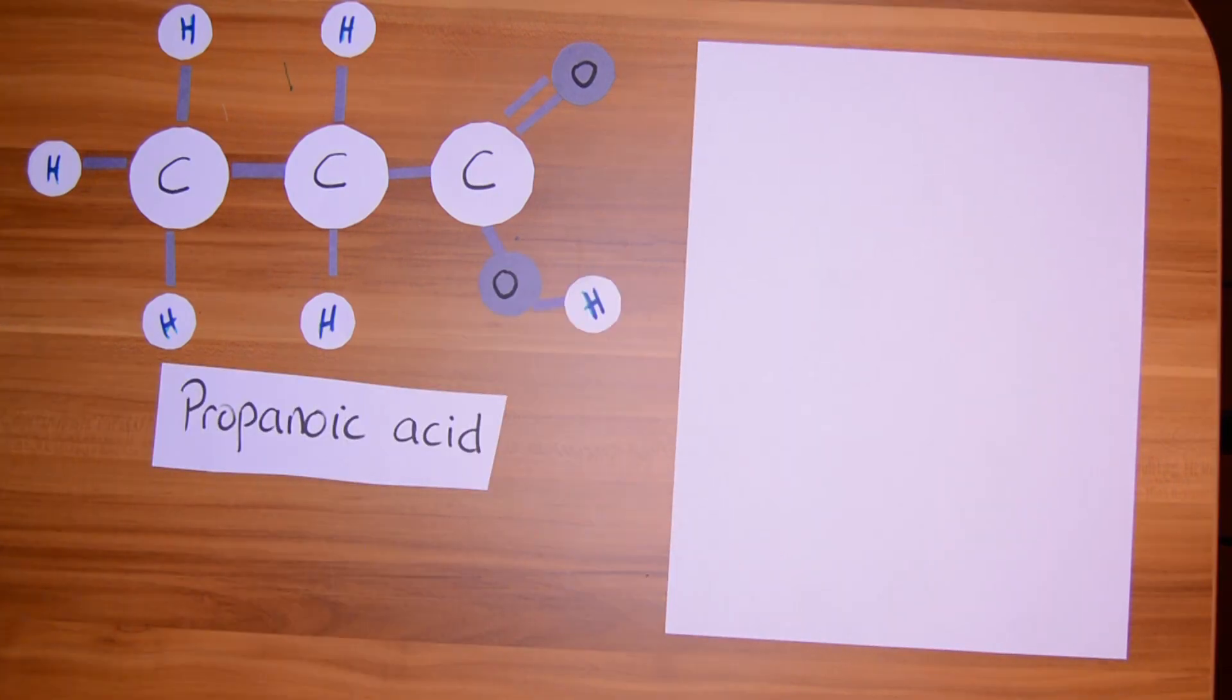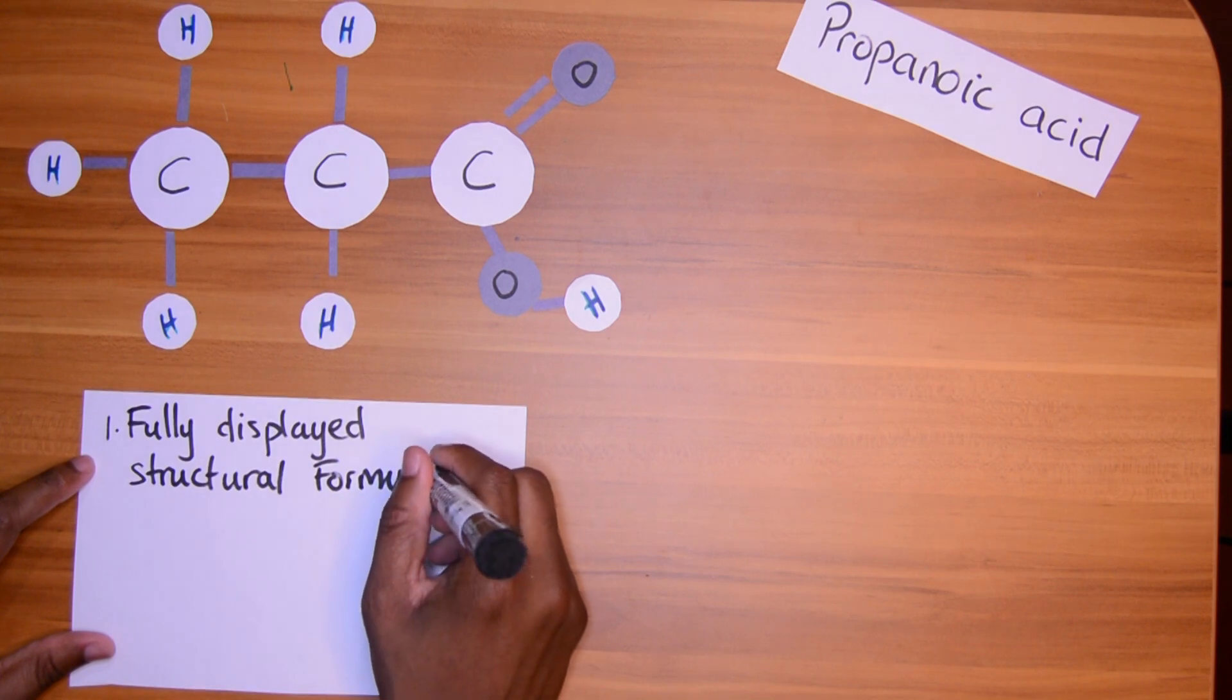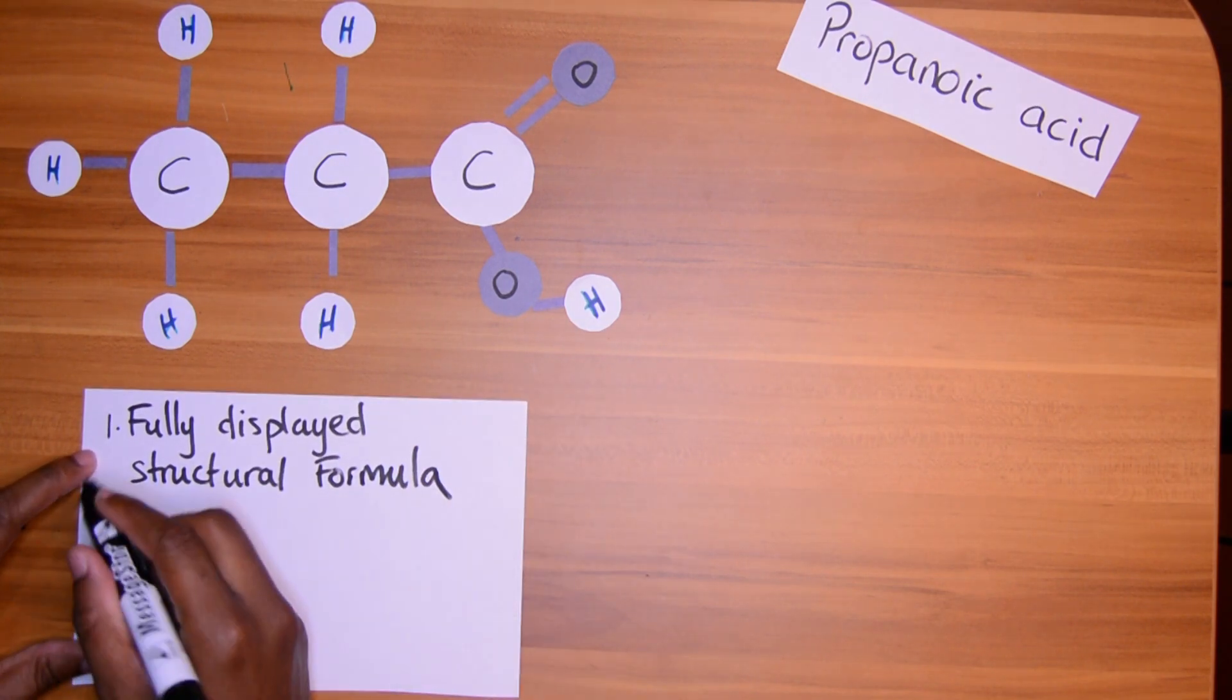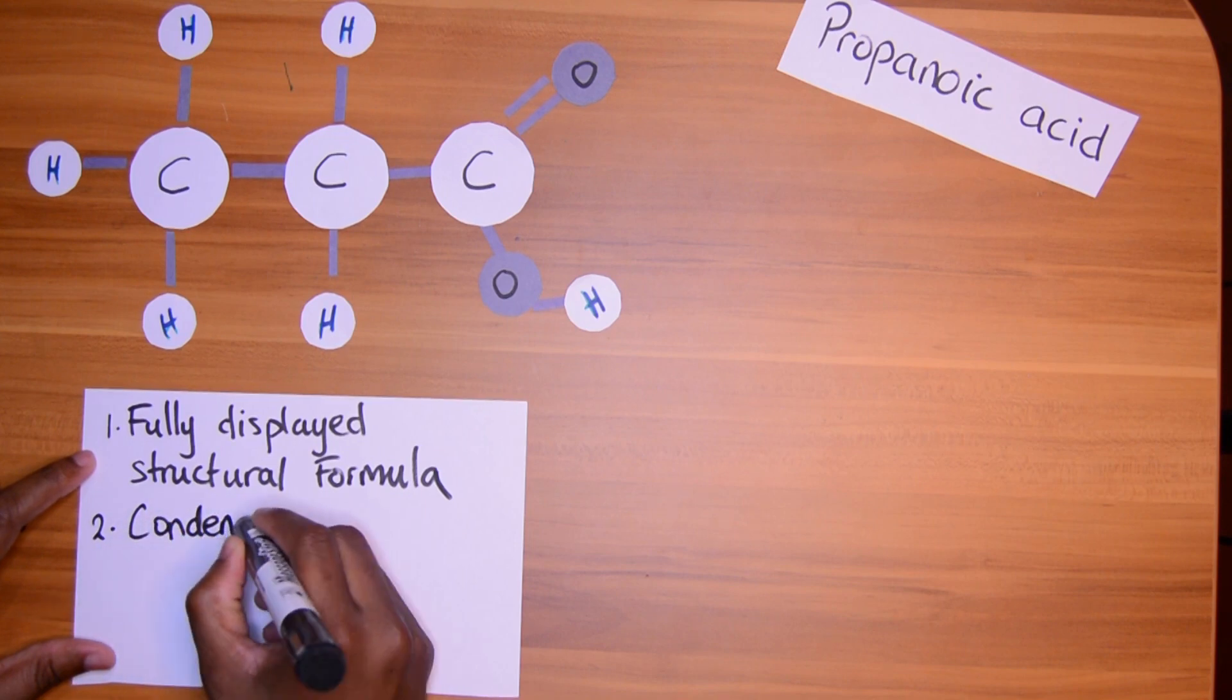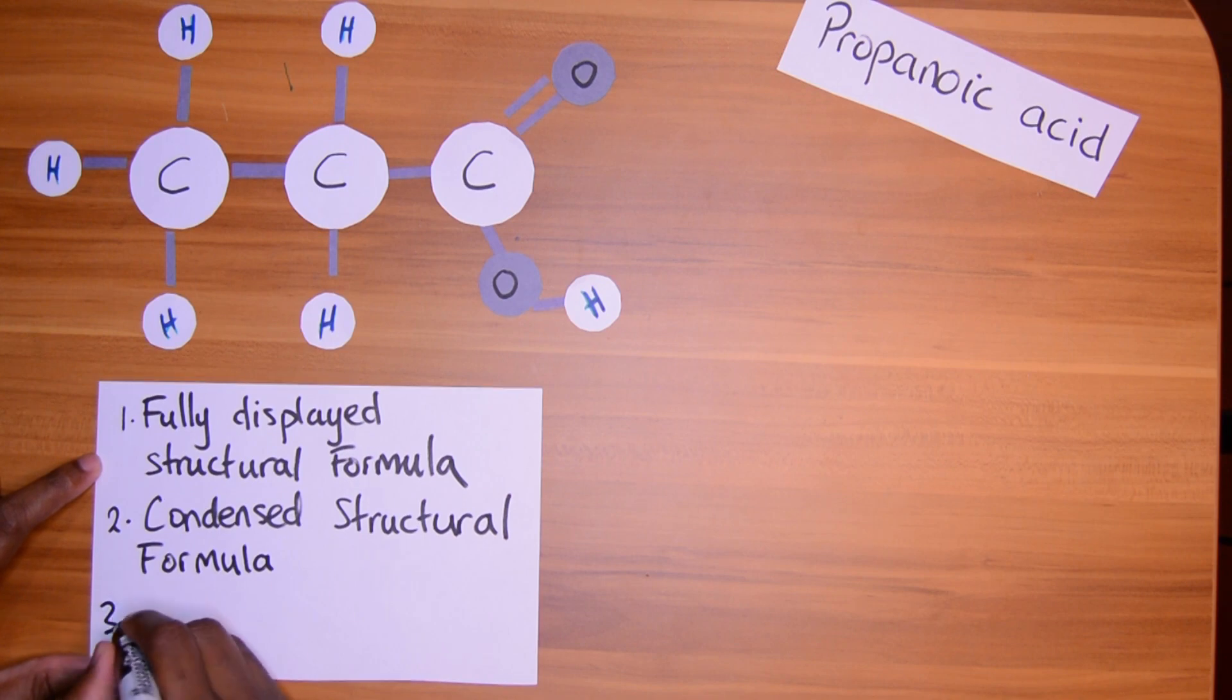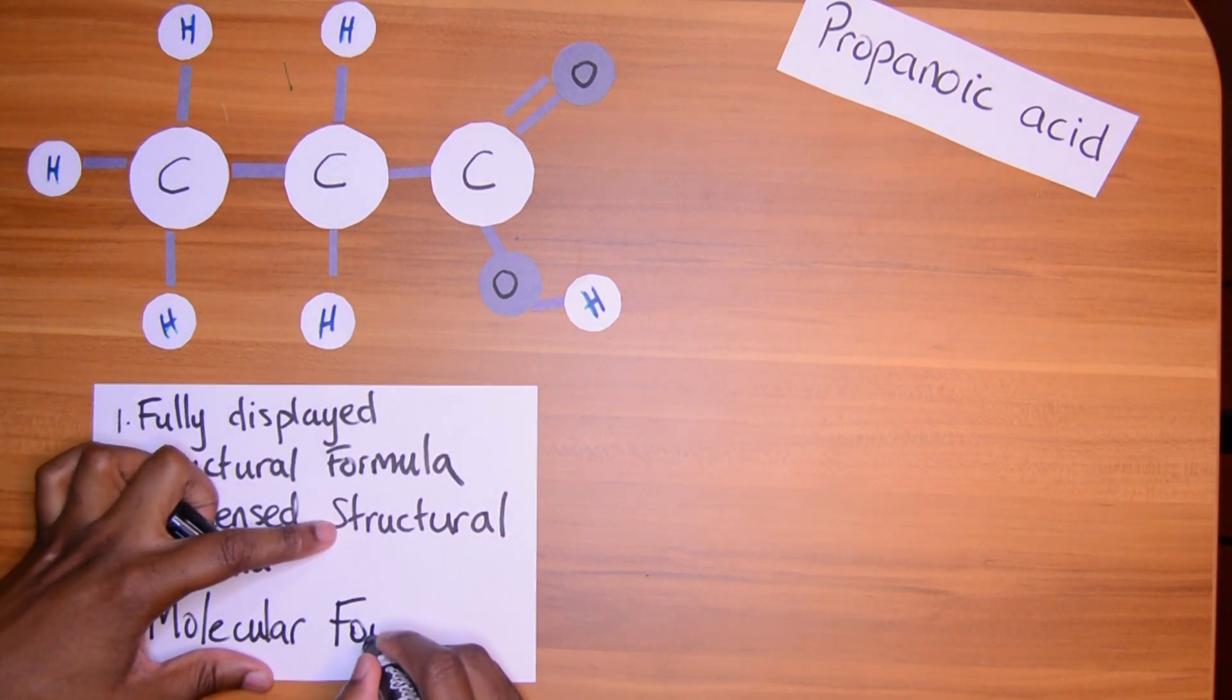Now there are different ways you can write the formula for propanoic acid. There are three main ways actually we can write formulae for organic compounds. Let's look at it. The first way is the fully displayed structural formula. The second way is the condensed structural formula. And the third way is the molecular formula.